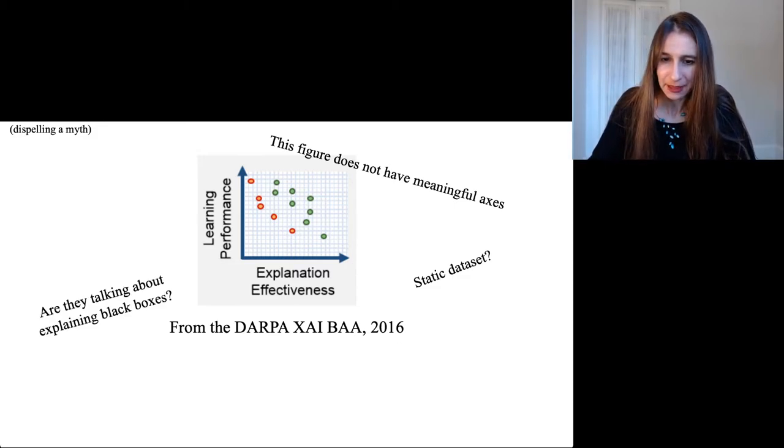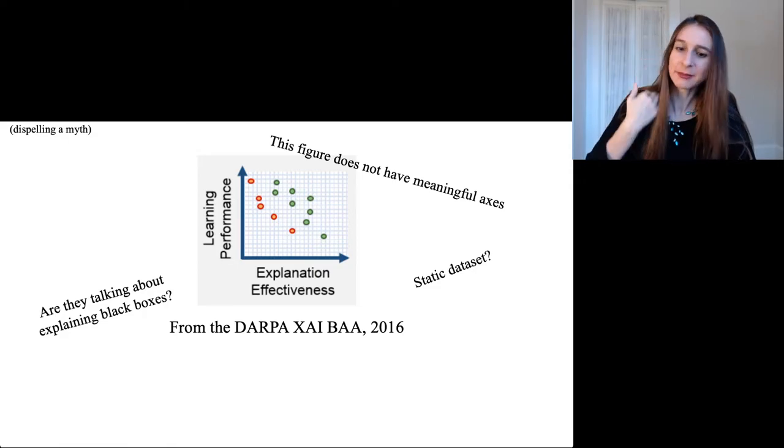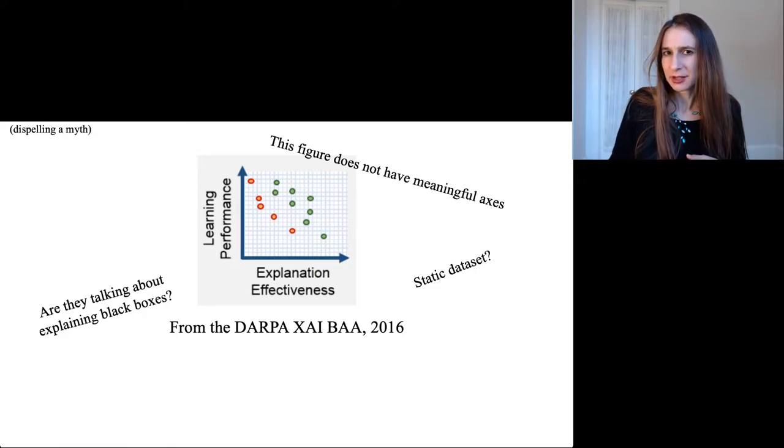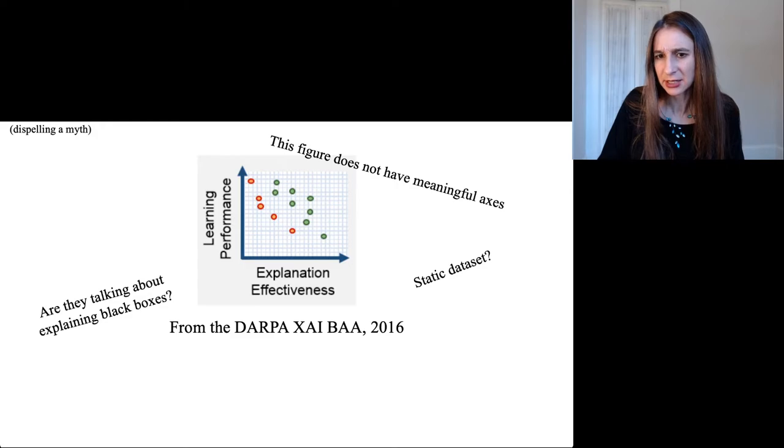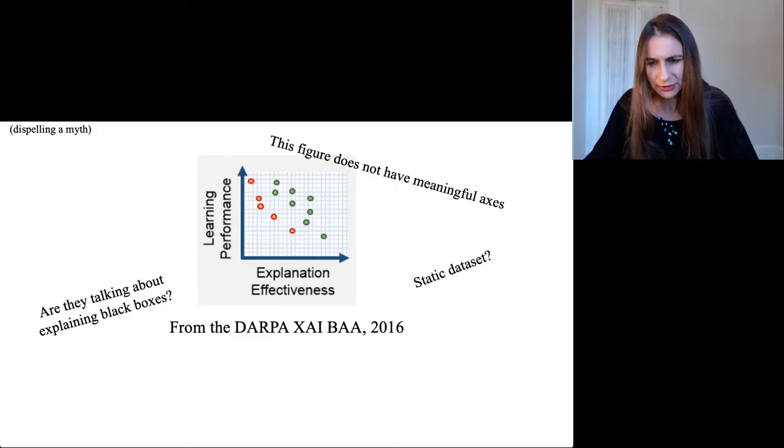Here they didn't define what they were talking about. Are they talking about approximating black boxes or explaining black boxes, or are they talking about building interpretable models on a data set? Those two are very different from each other.